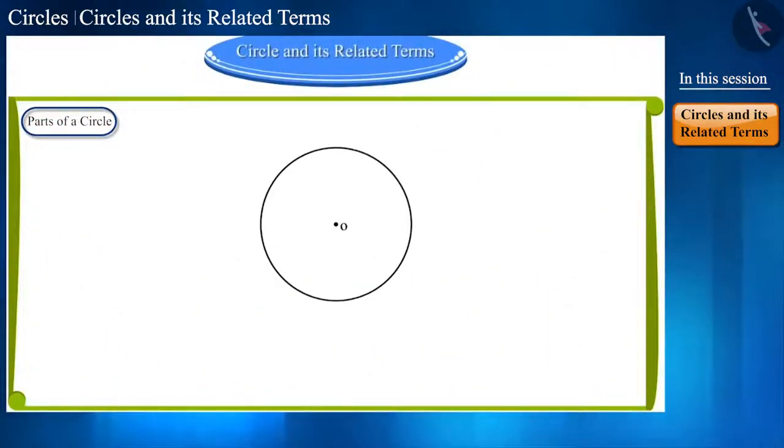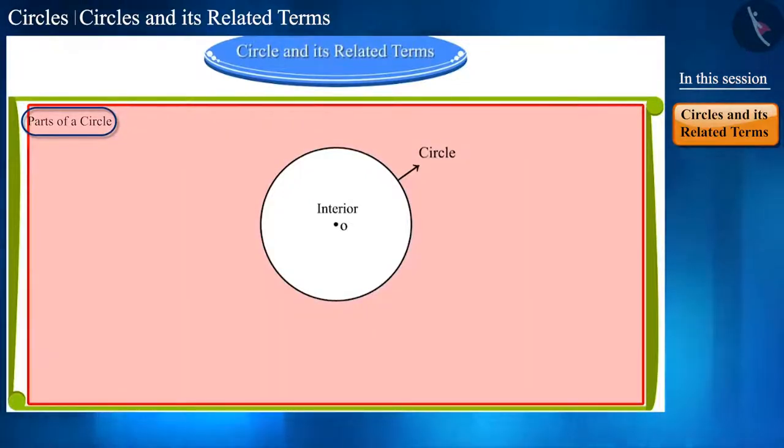Friends, the circle divides the plane on which it is situated into three parts. First is the part that is inside the circle and is called interior. Second is the circle itself. And third is the part that is outside the circle which is called exterior.